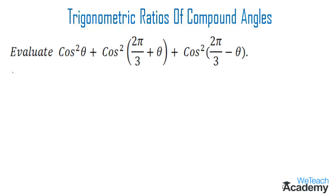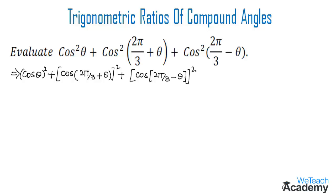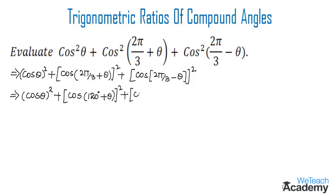We can write this equation in the form of cos²θ + cos²(2π/3 + θ) + cos²(2π/3 − θ). Now let us replace 2π/3, which is nothing but 120 degrees, so we get cos²θ + cos²(120° + θ) + cos²(120° − θ).